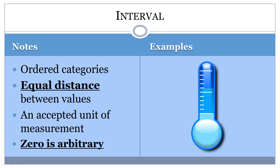With interval-level scales, there is a direct measurable quantity. In addition, zero does not represent the absolute lowest value — instead, it is a point on the scale with numbers both above and below it. If you know that the word interval means space in between, it makes remembering what makes this level of measurement different easy. Interval scales not only tell us about order, but also about the value between items on a scale.